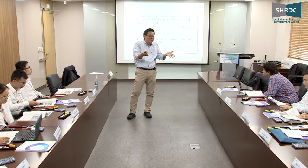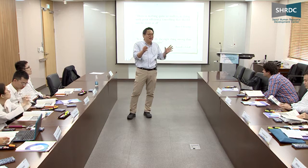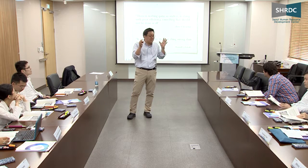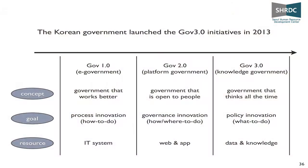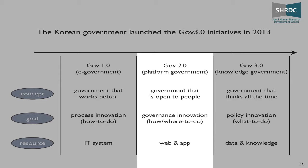Government 3.0, in one word, is to enable government to do the right thing by using current advanced technology, including big data, robotics, modeling, and IoT. Government 1.0 is governments that work better — doing things right. Government 2.0 is open government — open data and sharing data with shared agents. Government 3.0 goes further.